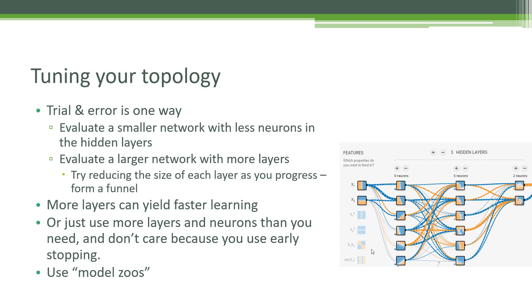Let's talk about tuning your topology. Another way to improve the results of your deep learning network is to play with how many neurons you have and how many layers of neurons you have. One way of dealing with it is just trial and error, kind of what we did in TensorFlow Playground. You can start with a smaller network with fewer neurons in the hidden layers, or evaluate a larger network with more layers. You want to see if you can get away with a smaller network and still get good results — keep making it smaller until you find the smallest it can safely be. Or you can try making your network larger and larger and see at what point it stops providing more benefits.